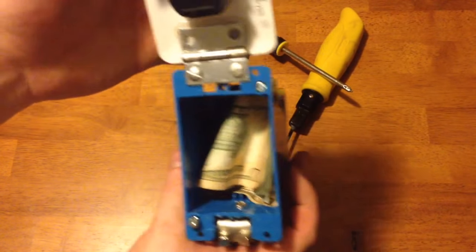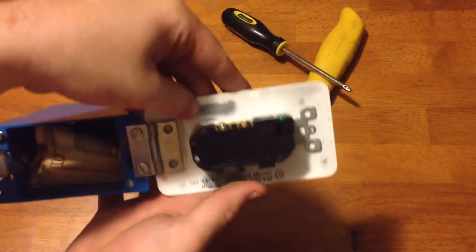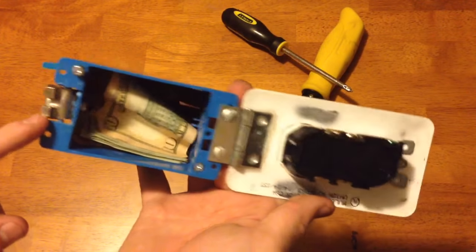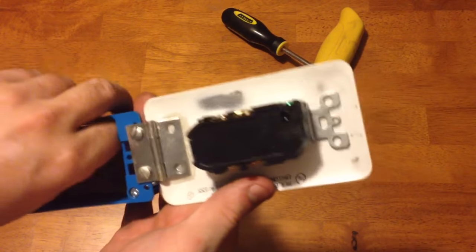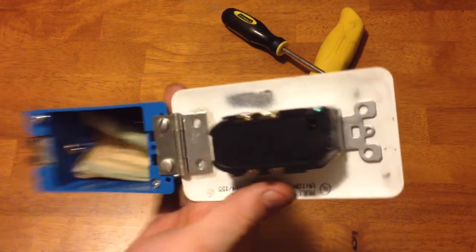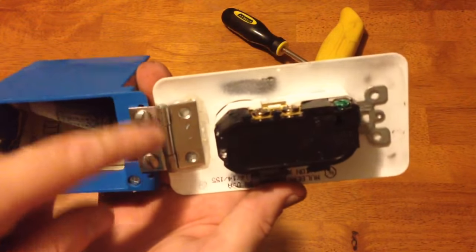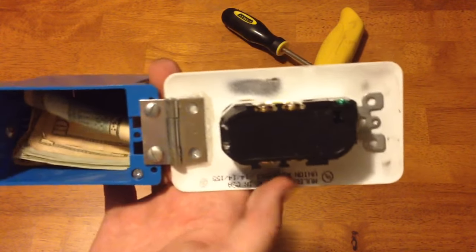But as you can see, inside I've got some money. This is kind of an inside view. Really, you can just see the two magnets sticking out here and just two screws here.